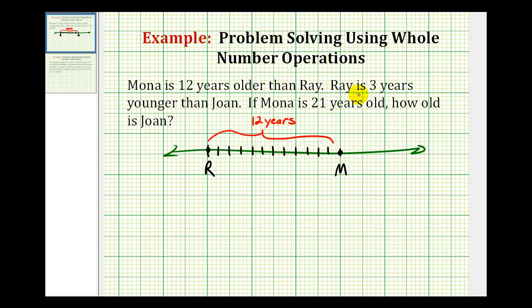Next, since Ray is three years younger than Joan, if we start at the age of Ray, we can go right three units. This point right here would represent the age of Joan. Again, Ray is one, two, three years younger than Joan.